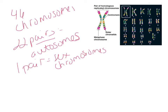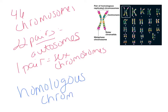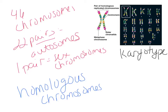So 46 chromosomes: 22 pairs are autosomes that code for pretty much anything and everything in your body, and then one pair that codes for gender — the sex chromosomes. The chromosomes are paired up into homologous pairs. Homologous chromosomes contain the same genes and control the same characteristics, but they may have different alleles. For example, they both code for eye color, but one may have the allele for brown and one for blue. They are the same length and are arranged from longest to shortest in a karyotype.